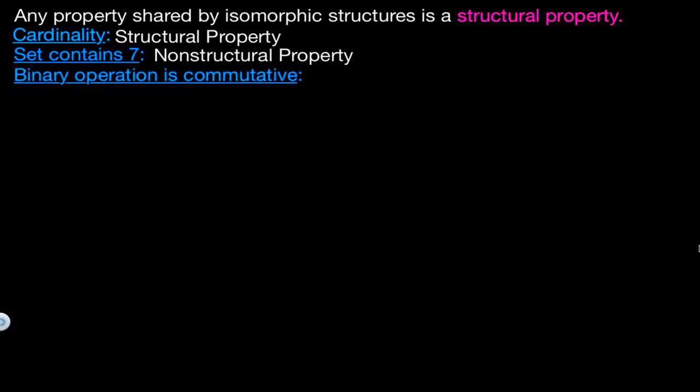Next, what about if the binary operation is commutative? Remember that the structure of the binary operation must be preserved between two isomorphic structures. So if one binary operation is commutative, the other must be commutative as well, and that makes this a structural property. Let's formally prove this, which is really good practice when you're just learning about proofs. It's especially important when you are new to proofs that whenever you state something, you can actually back it up with a formal proof.